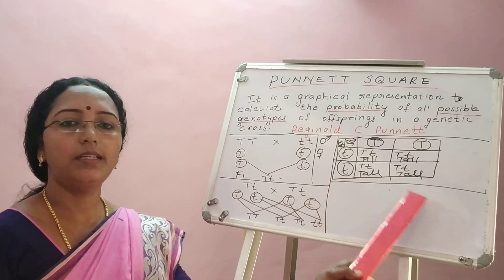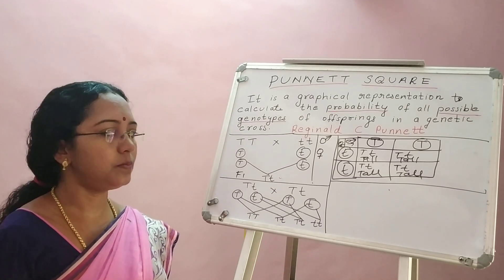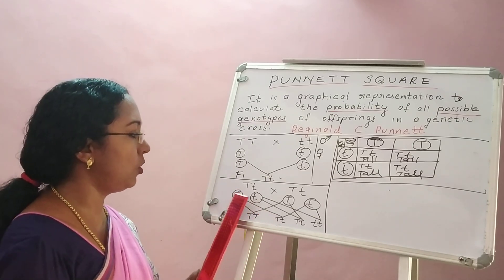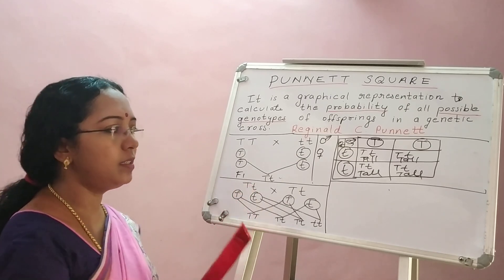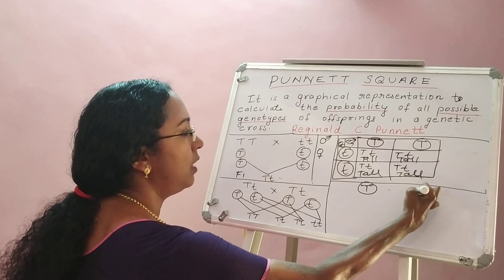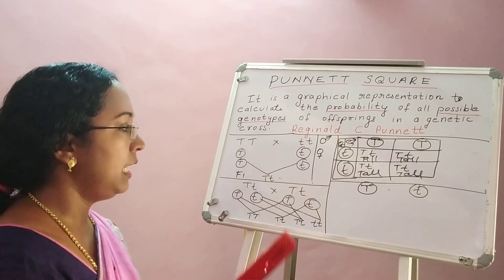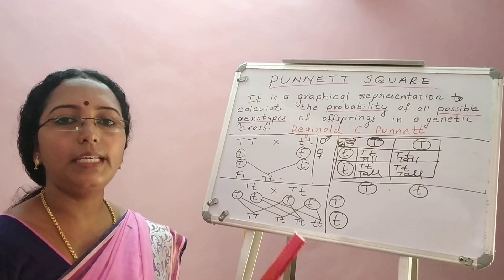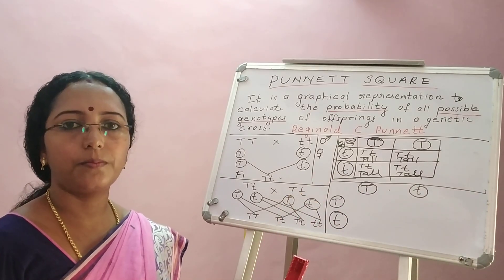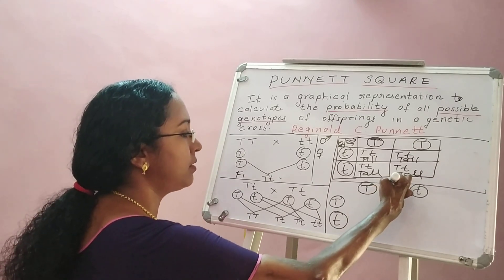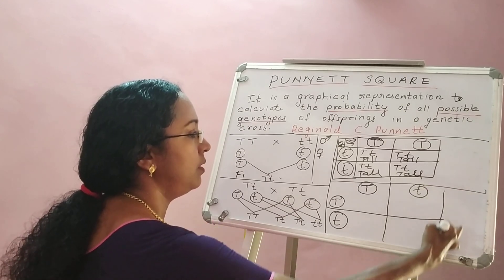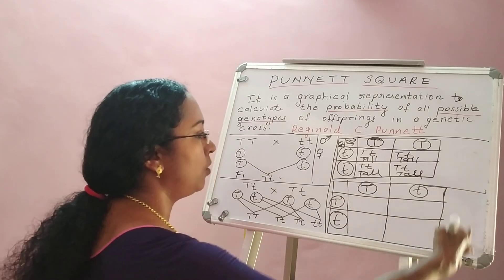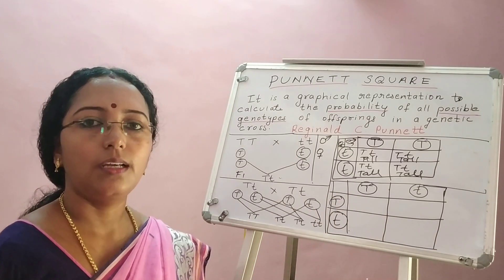To represent the F2 cross, we start the Punnett square with gametes again. We write the gametes of one parent on the top row, encircling them to show they are gametes, and the gametes of the next parent on the left column. Then we separate out the gametes and form the squares. Next, we fill up the squares using the top and left gametes for each position.